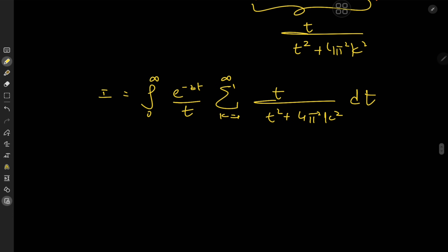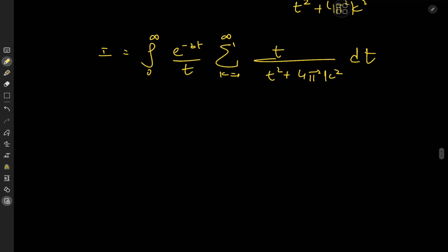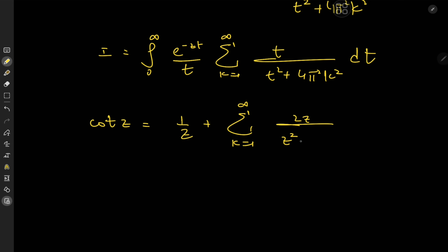The question is how to evaluate this infinite series. We reference a previous result — one of the coolest infinite series ever — which is the partial fractions series expansion for the cotangent function: cot(z) = 1/z + sum over k from 1 to infinity of 2z / (z² − k²π²).